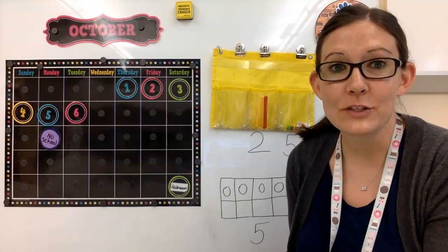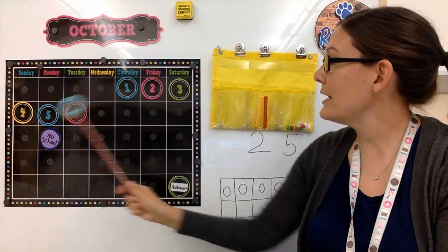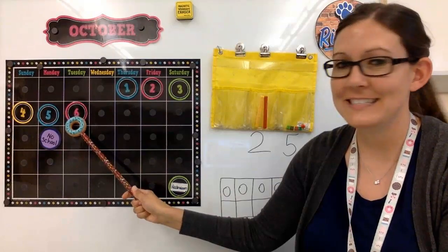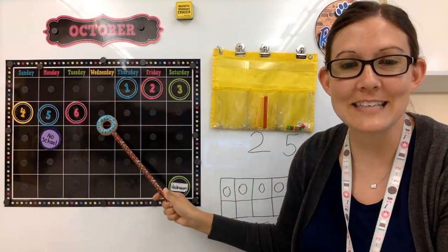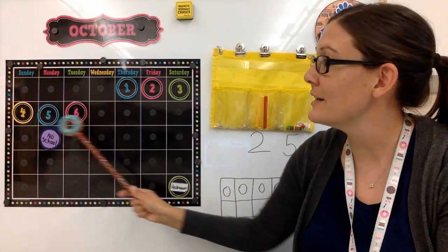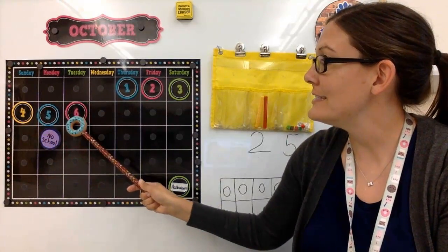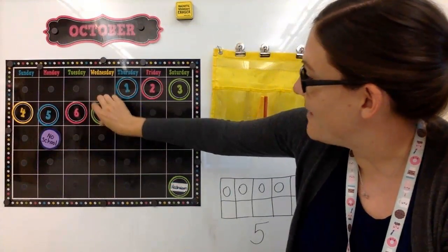And then let's do the date. One, two, three, four, five, six. Yesterday was the sixth. What's today? What's the number that comes after six? Four, five, six, seven! Today is the seventh.